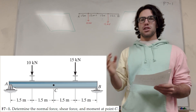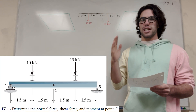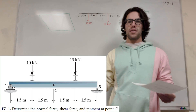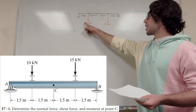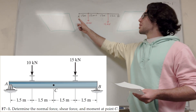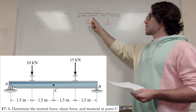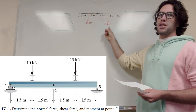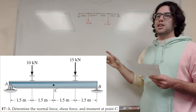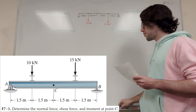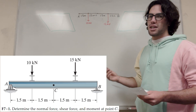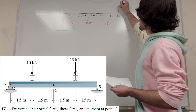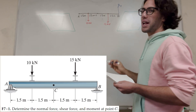Point C is in the center of this rod, so that means we're going to have to take a cut. First, let's draw a free body diagram. Each segment is 1.5 meters long and there's a 10 kilonewton force and a 15 kilonewton force. B is a roller, so it has a force only in the y direction — B_y pointing upward.